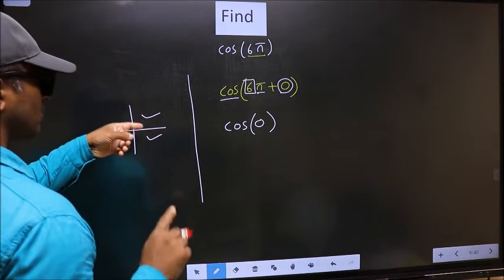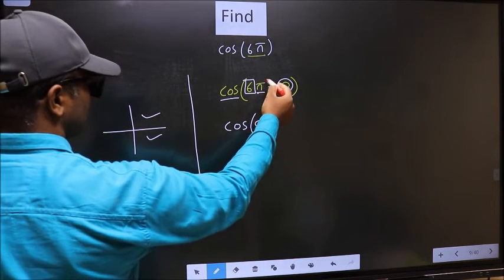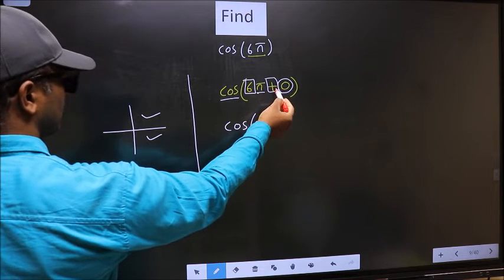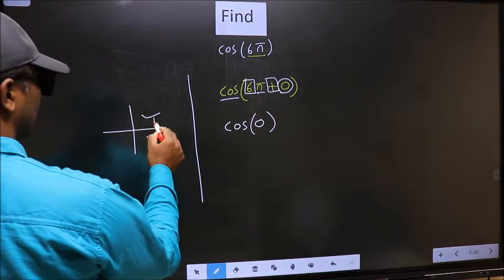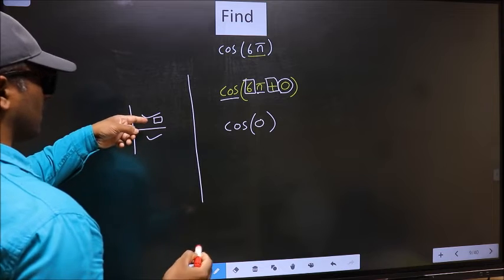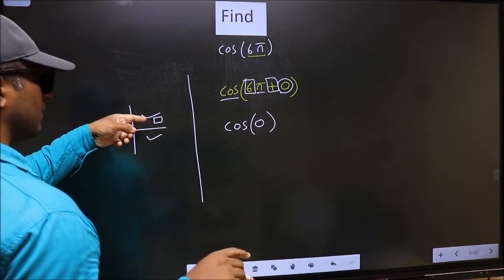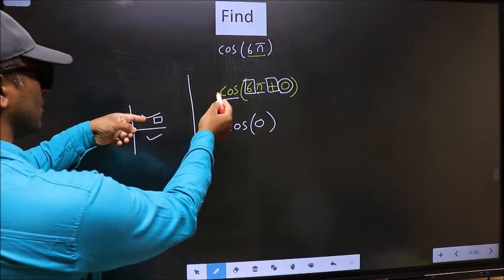To select the quadrant, we should look at this symbol. Here we have plus, so the angle lies in the first quadrant. In the first quadrant, cos is positive.